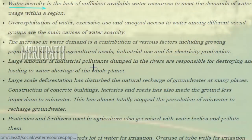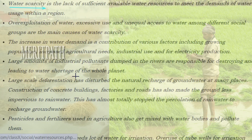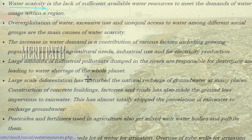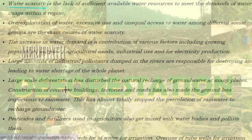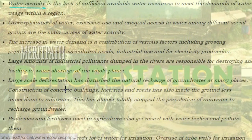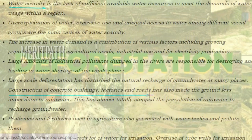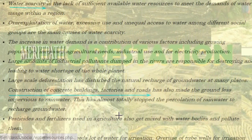The increase in water demand is driven by various factors including growing population, increased agricultural need, industrial use, and electricity production. Large amounts of industrial pollutants dumped in rivers are responsible for destroying and polluting water sources across the planet. Large-scale deforestation has disturbed the natural recharge of groundwater at many places. Construction of concrete buildings, factories, and roads has made the ground less permeable to rainwater.